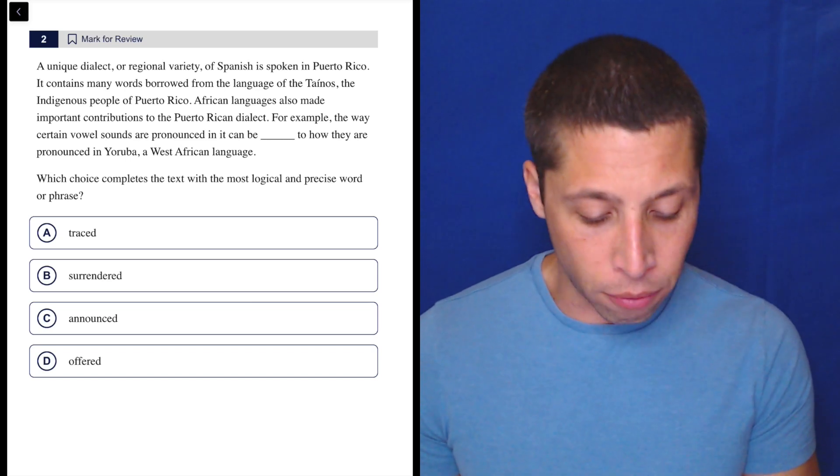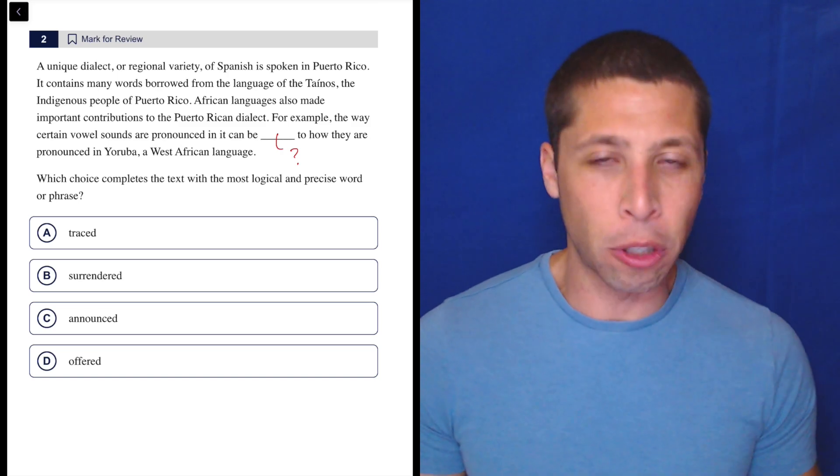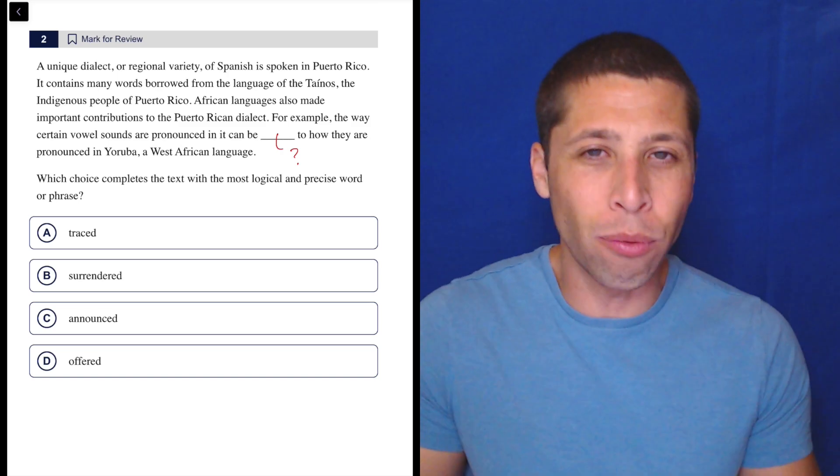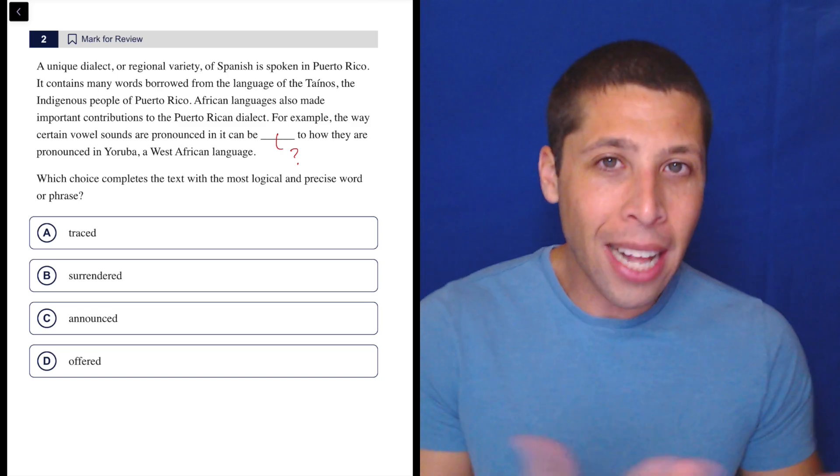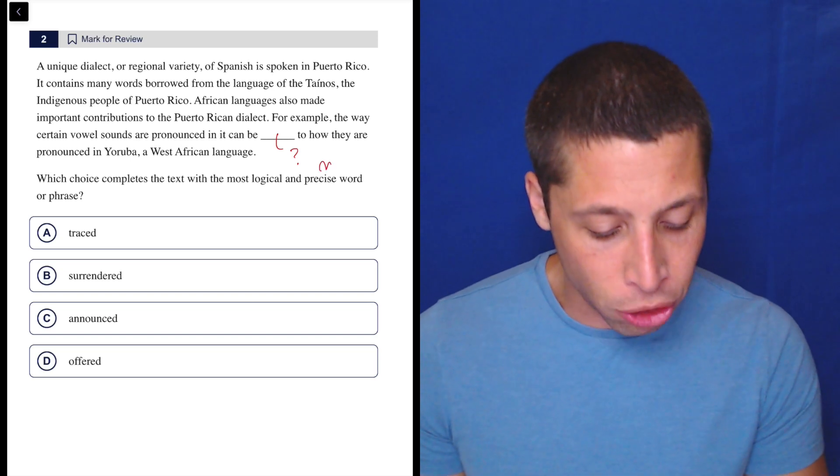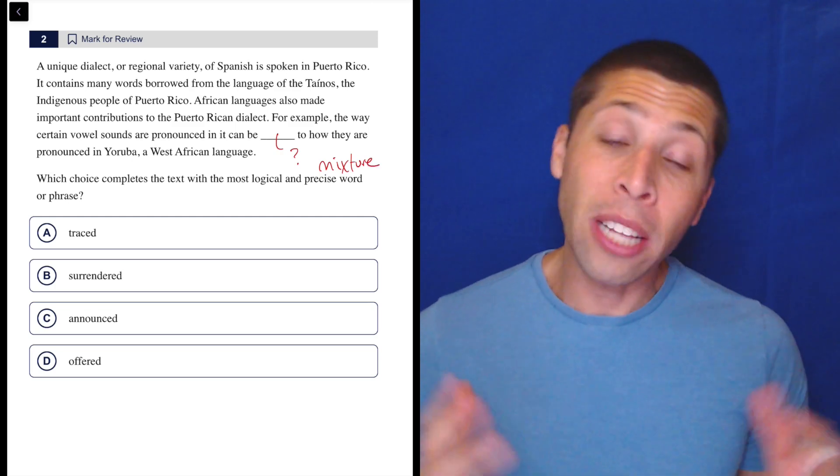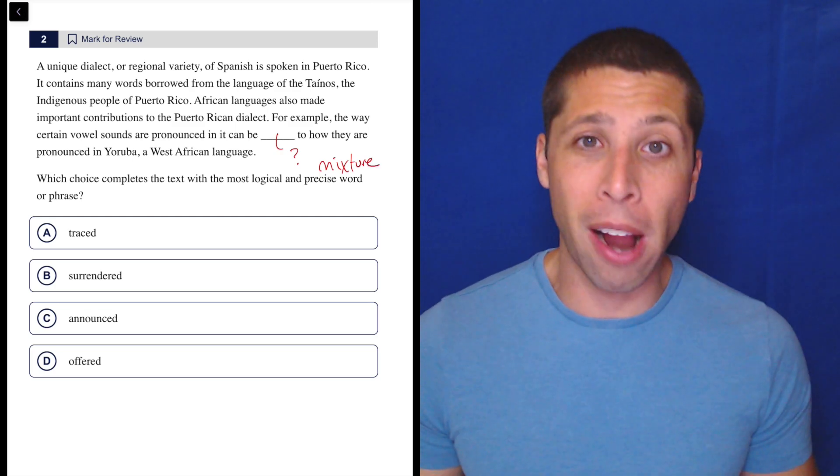Well, here's a good example of a case where I don't have a very good kind of instinctive response to that blank. I don't really know what's going to go in there, but that's okay. Maybe it has something to do with like a mixture because we're talking about the different places things come from, but I don't really know. And that's okay. I'm not going to reread the passage to try to figure out what it's going to be.